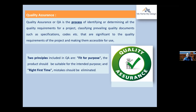Quality assurance includes two principles: fit for purpose — the product should be suitable for the intended purpose — and right first time — mistakes should be eliminated. Whatever material we are selecting for the project should fit for purpose. Before putting it to use, we confirm through many tests that the material is the right kind. After satisfying many parameters, only then do we accept the material.